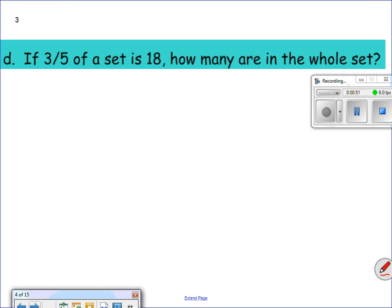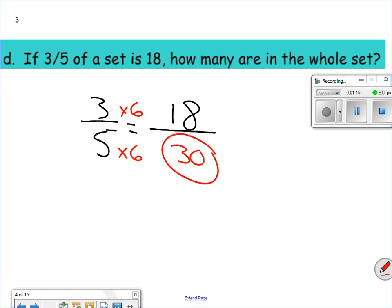If 3 fifths of the set is 18, how many are in the whole set? So 18 is part of it. That means 18 is my numerator. We're trying to find out the whole, which is my denominator. So 3 fifths into 18. 3 times 6 is 18, so 5 times 6 is 30. 30 is my whole set.